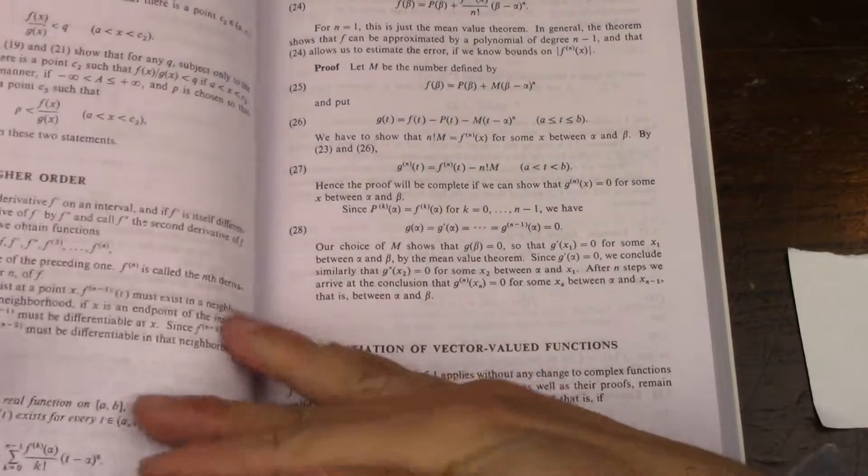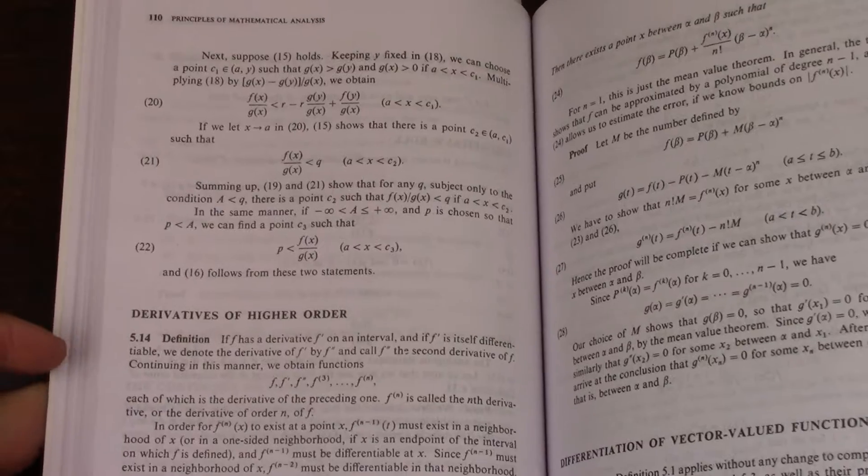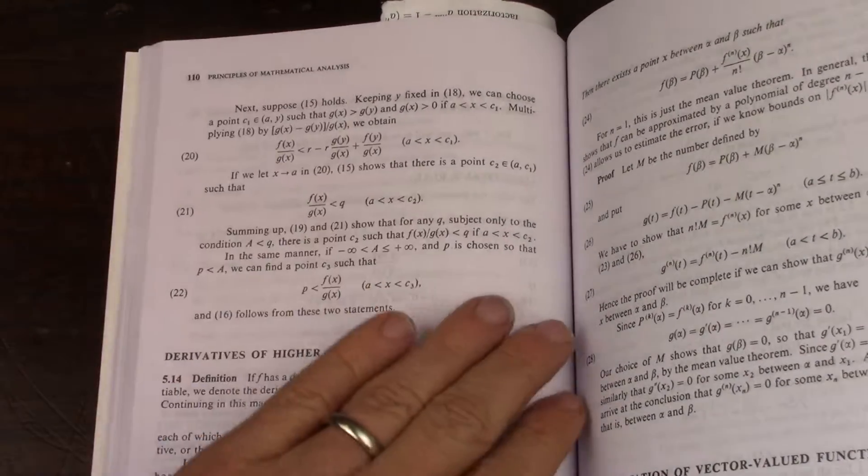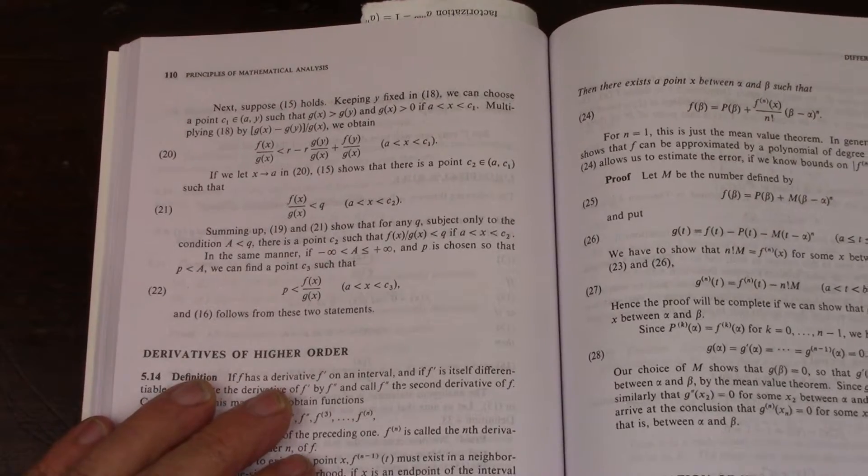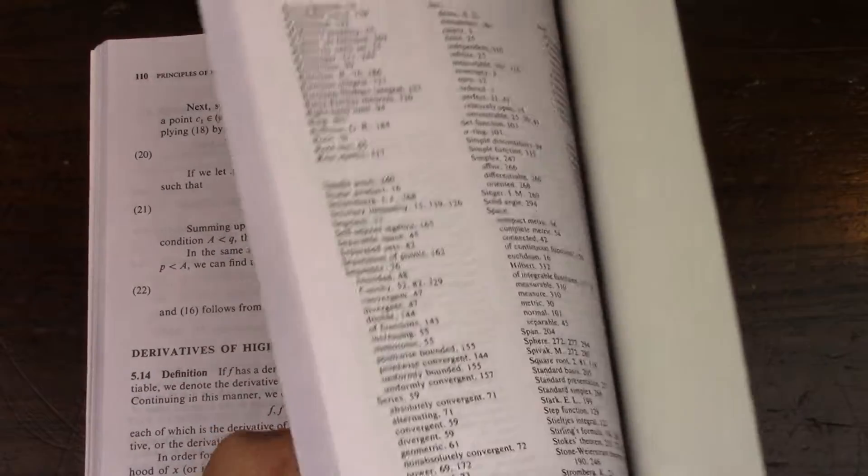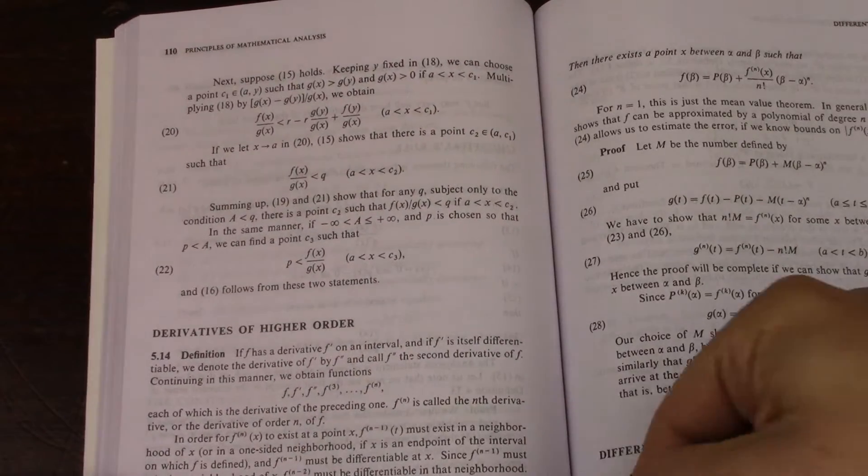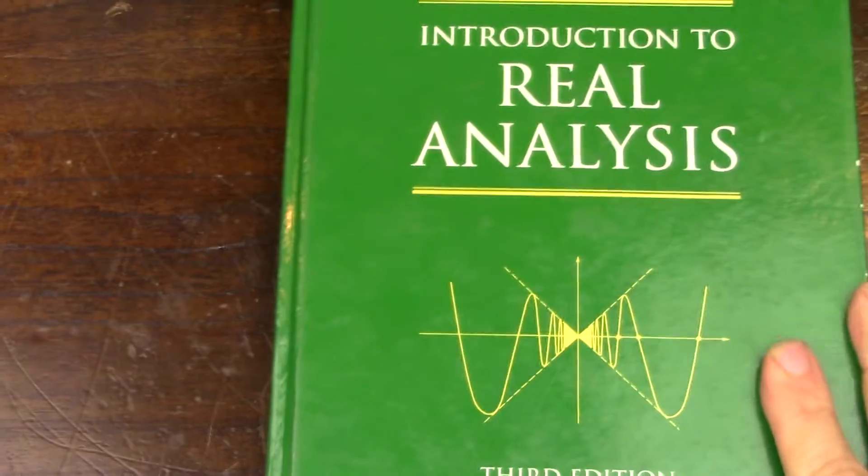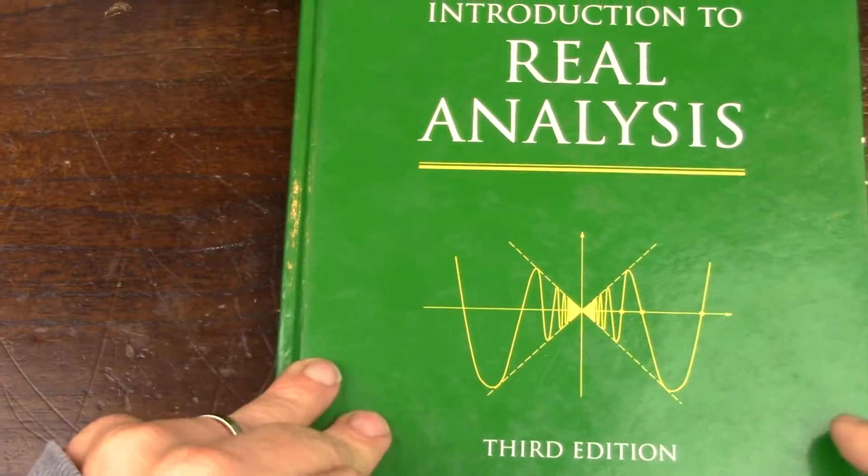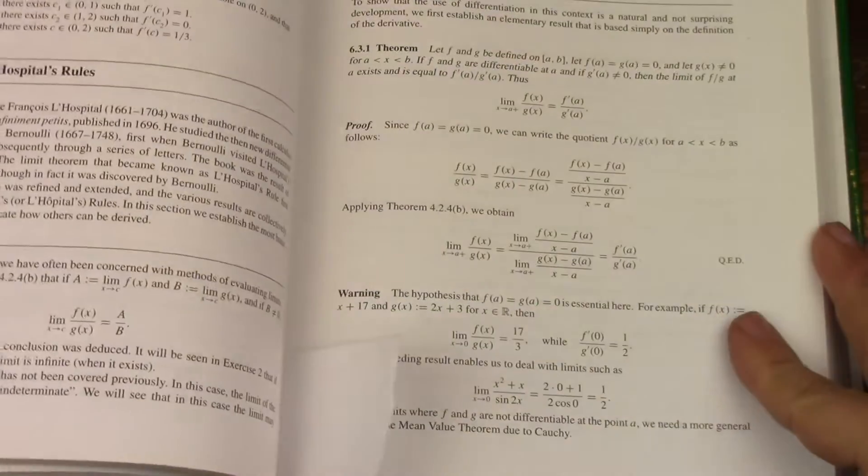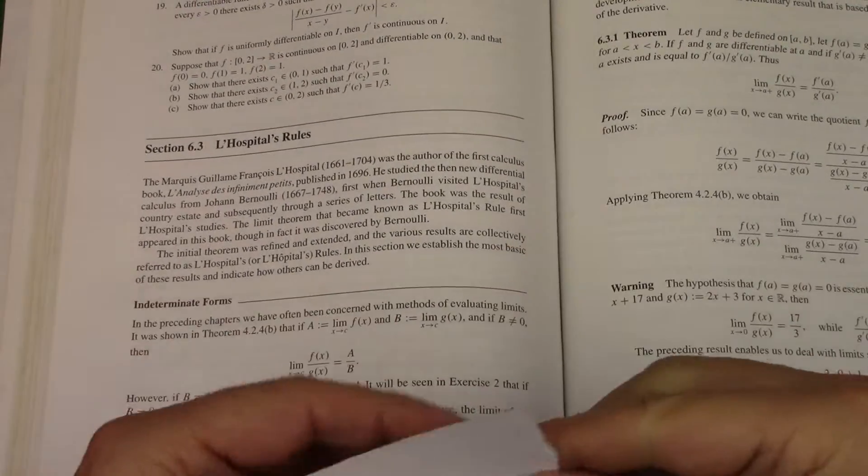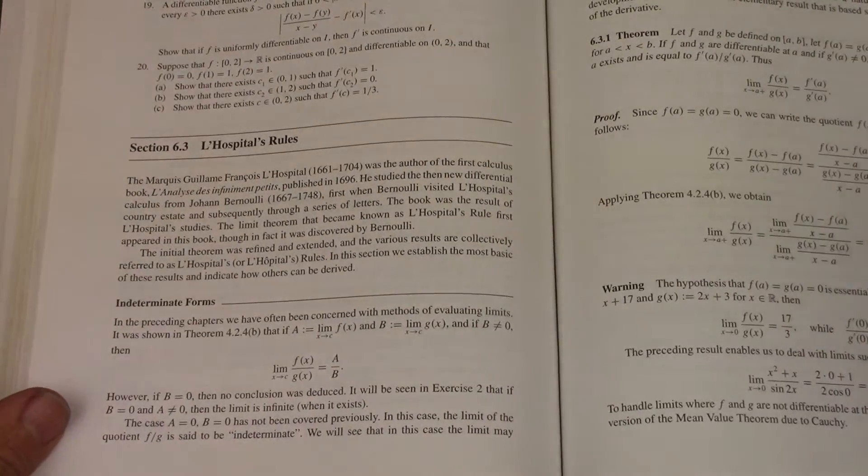Also very thorough, the way an analysis book would do it. So it's just brief, poetic, clean—that's your typical Rudin style. Then, the next book that I looked at was Bartle and Sherbert.